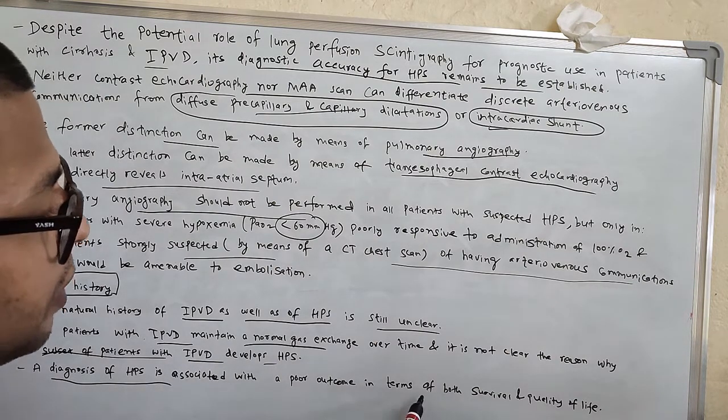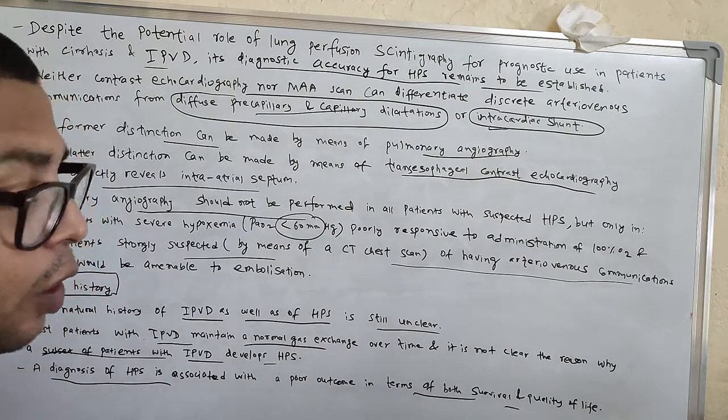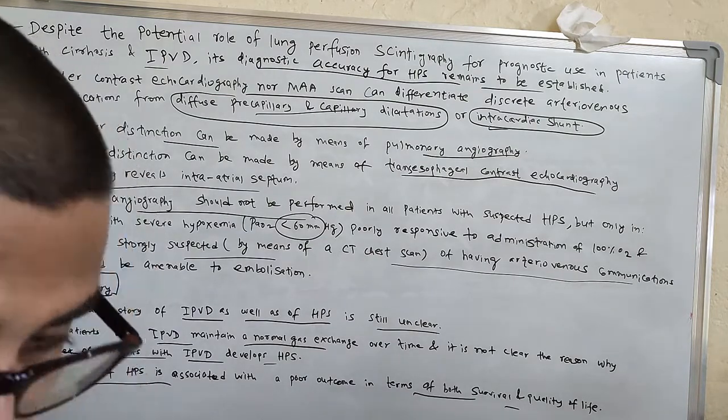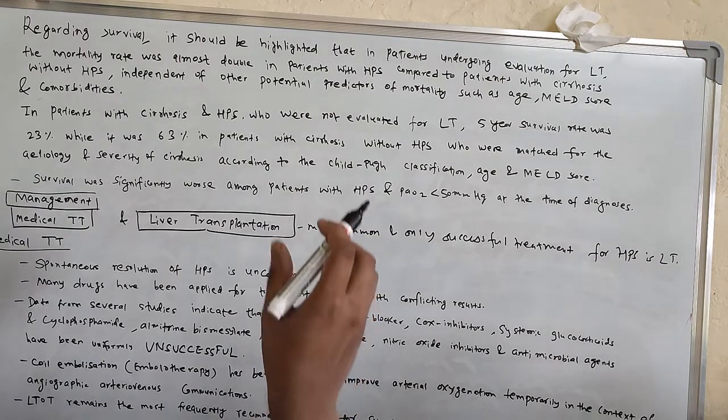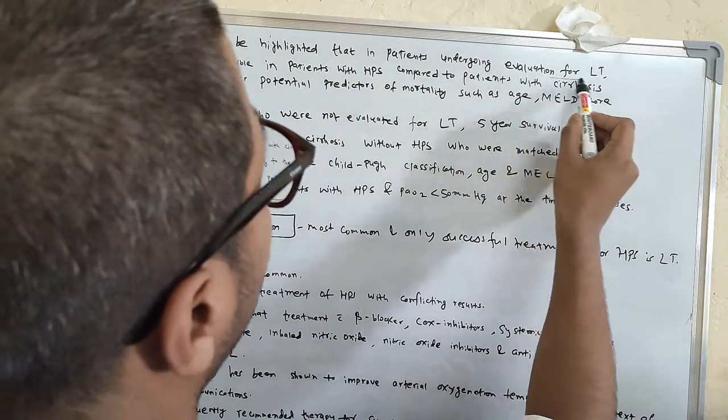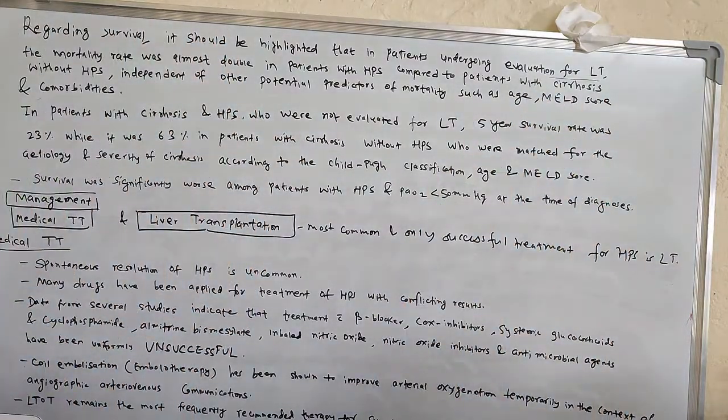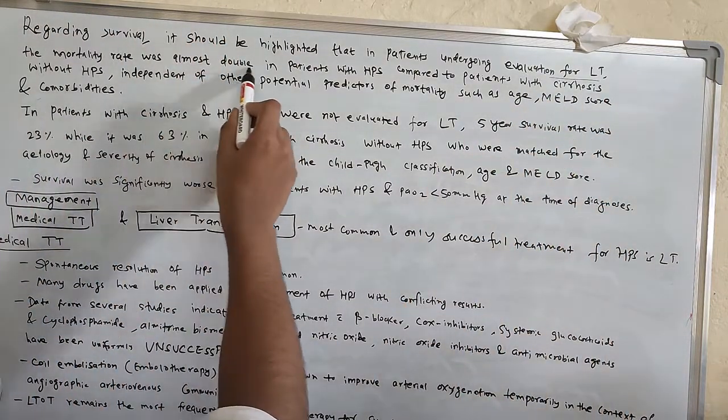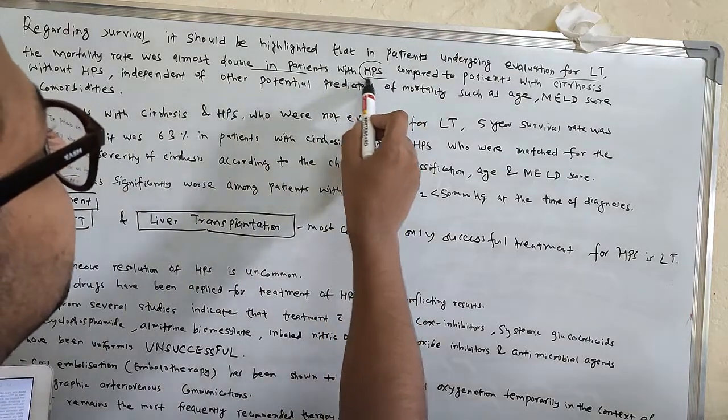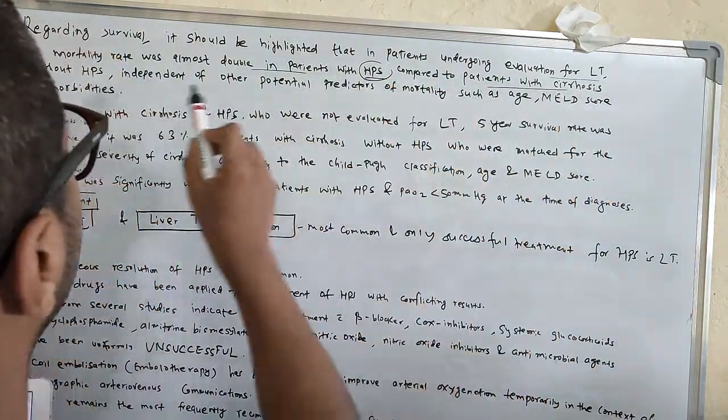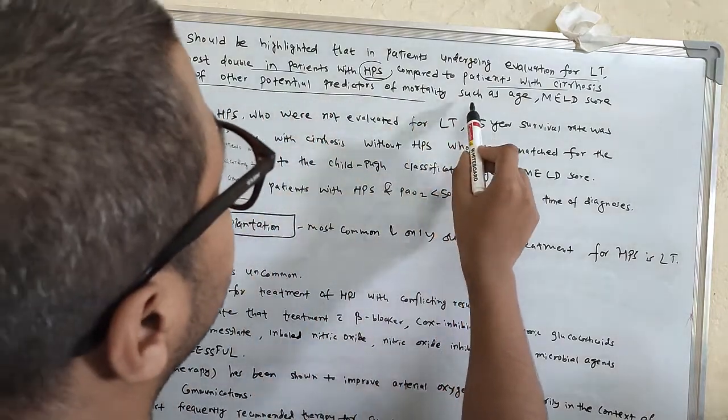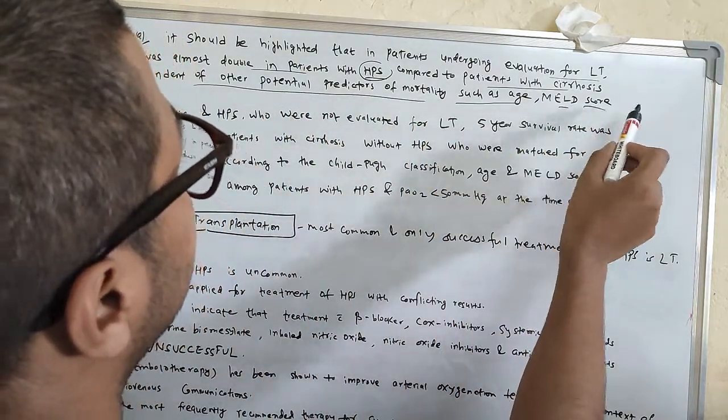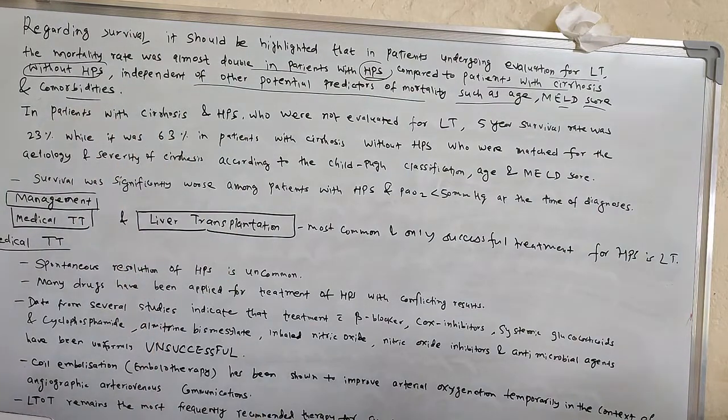A diagnosis of HPS is associated with poor outcome in terms of both survival and quality of life. Regarding survival, it should be highlighted that in patients undergoing evaluation for liver transplantation, the mortality rate was almost double in patients with HPS compared to patients with cirrhosis without HPS, independent of other potential predictors of mortality like MELD score and comorbidities.